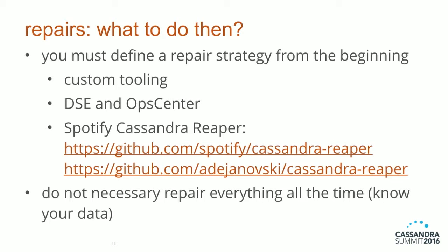For repairs, you have to think hard about it from the start. You have several options: custom tuning with your own scripts, using DSE OpsCenter which handles it for you, or using Spotify Cassandra Reaper which has a UI — there's a fork that supports Cassandra beyond version 2.1. Also, you don't necessarily need to repair everything: if you have huge tables with data you know you're not mutating, just remove them from the repairs and save yourself some time.